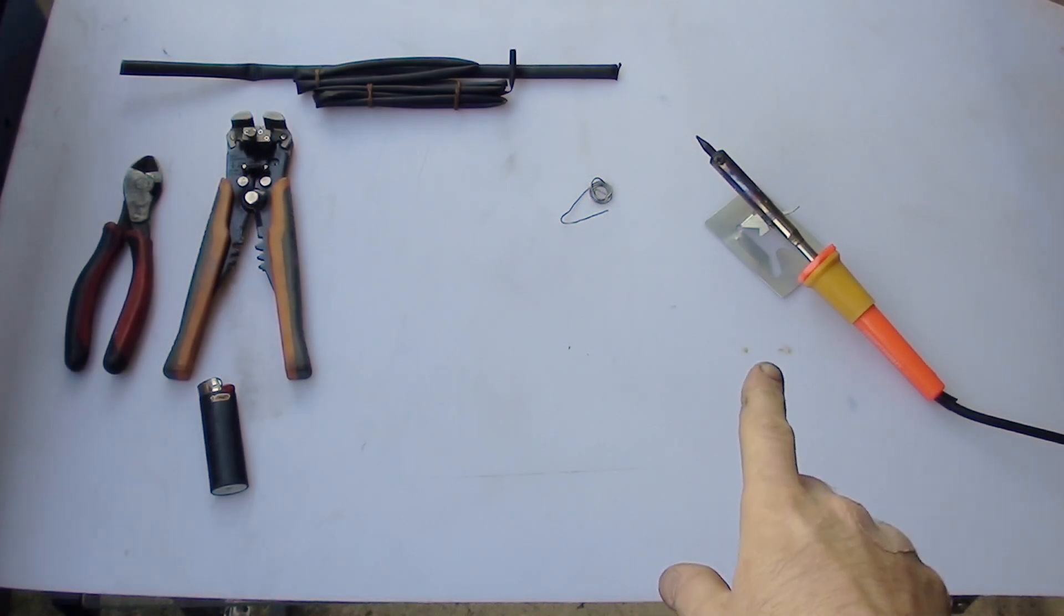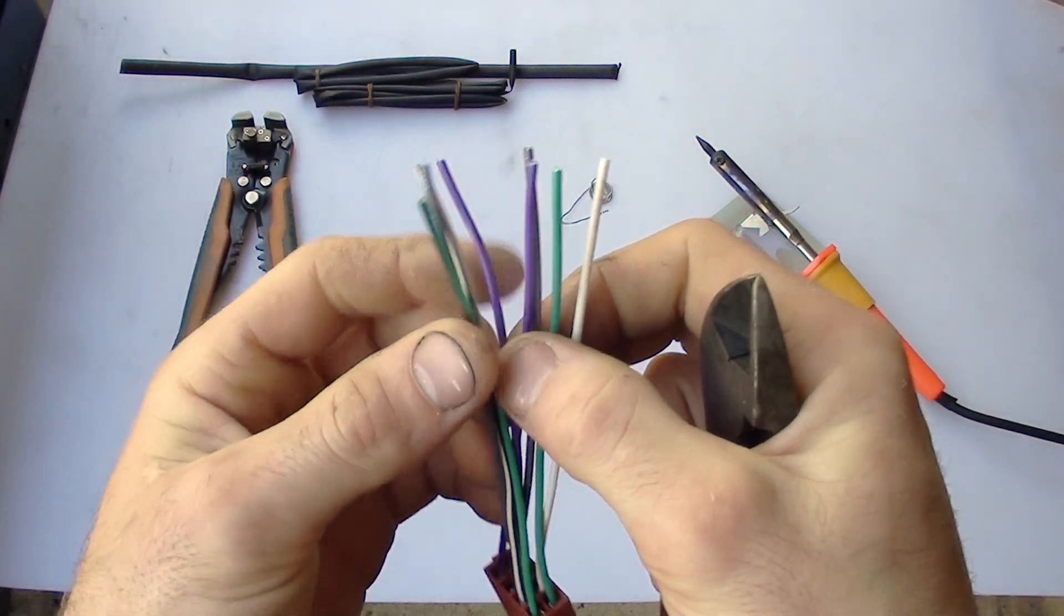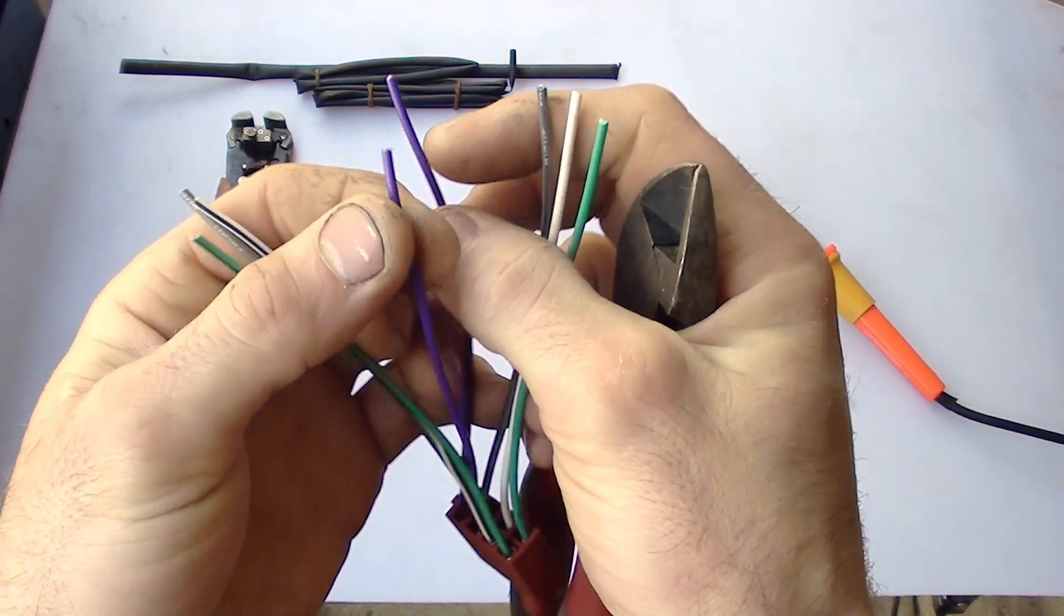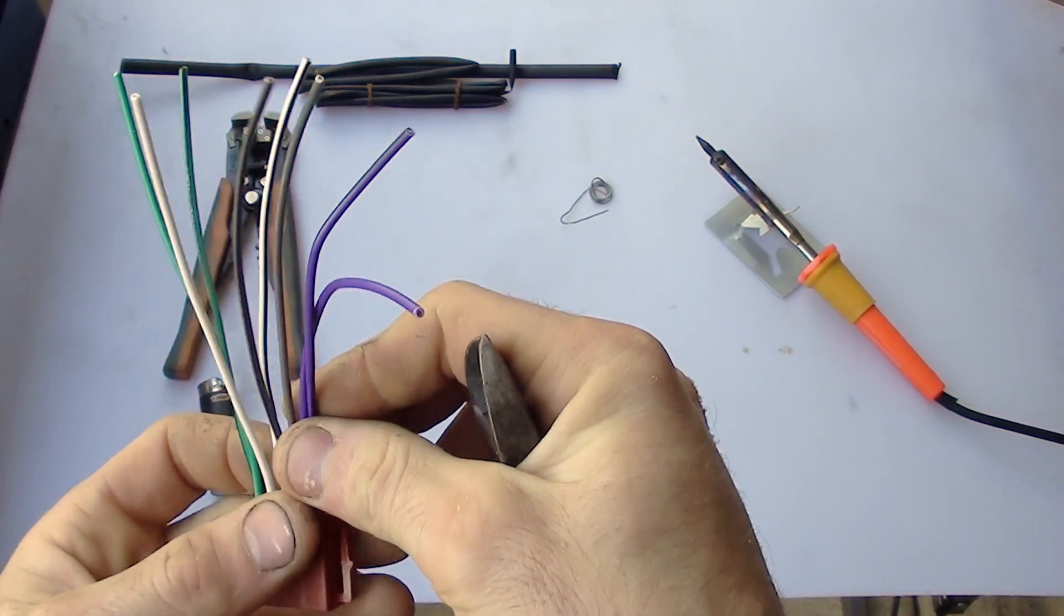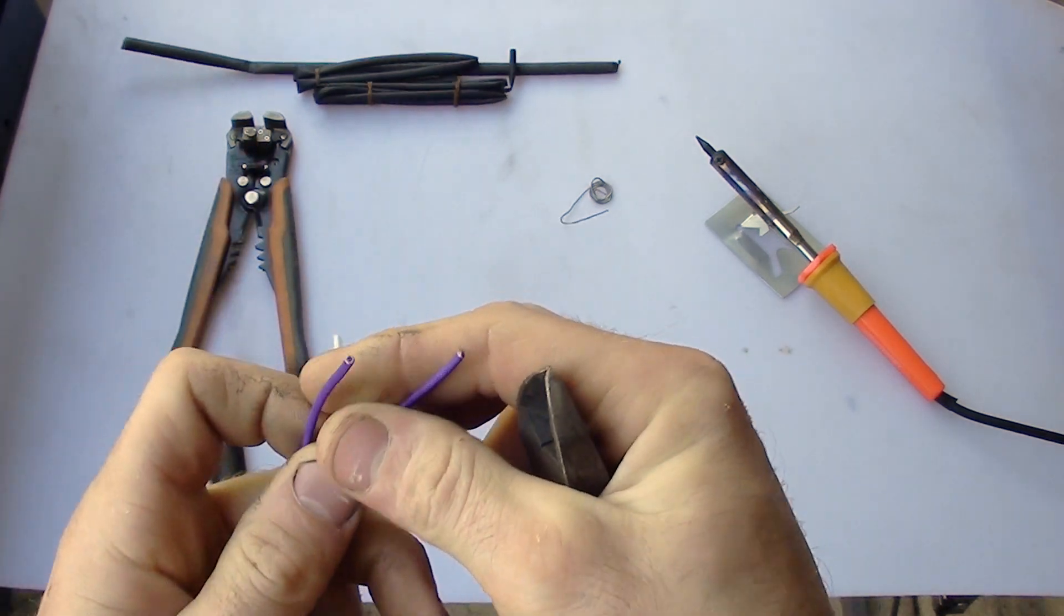Alright guys, so I've had the soldering iron heating up for a couple of minutes just to let it get up to temperature. I'm just going to do a tutorial joining these wires, so I'll join the purple to the purple. So firstly you just get both the wires you want to connect.